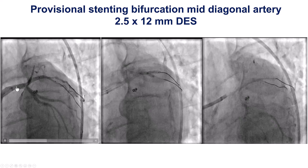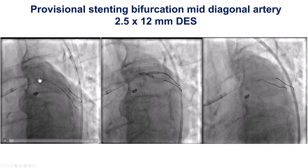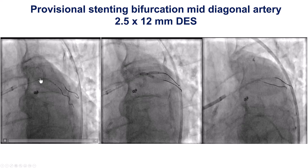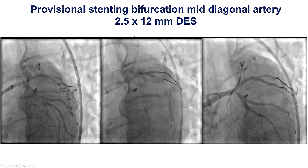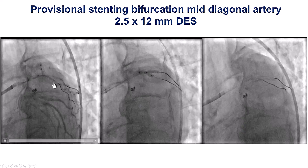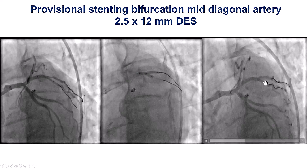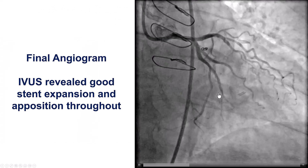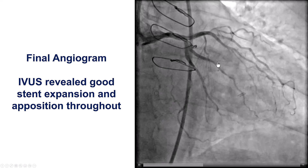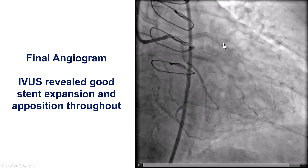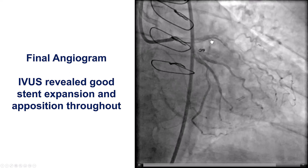The question was then how to treat the other bifurcation — a branch that retrospectively was not the Ramus, but was actually a large diagonal coming off the proximal LAD. We decided again to go with a provisional approach. We placed a small 2x5x12mm stent into the inferior branch, jailing the superior branch, rewired, and performed a kissing balloon inflation, providing a nice final result. We now have restoration of flow in the left main, into the circumflex obtuse marginal branch, and into the LAD with the large diagonal. IVUS confirmed good stent expansion.